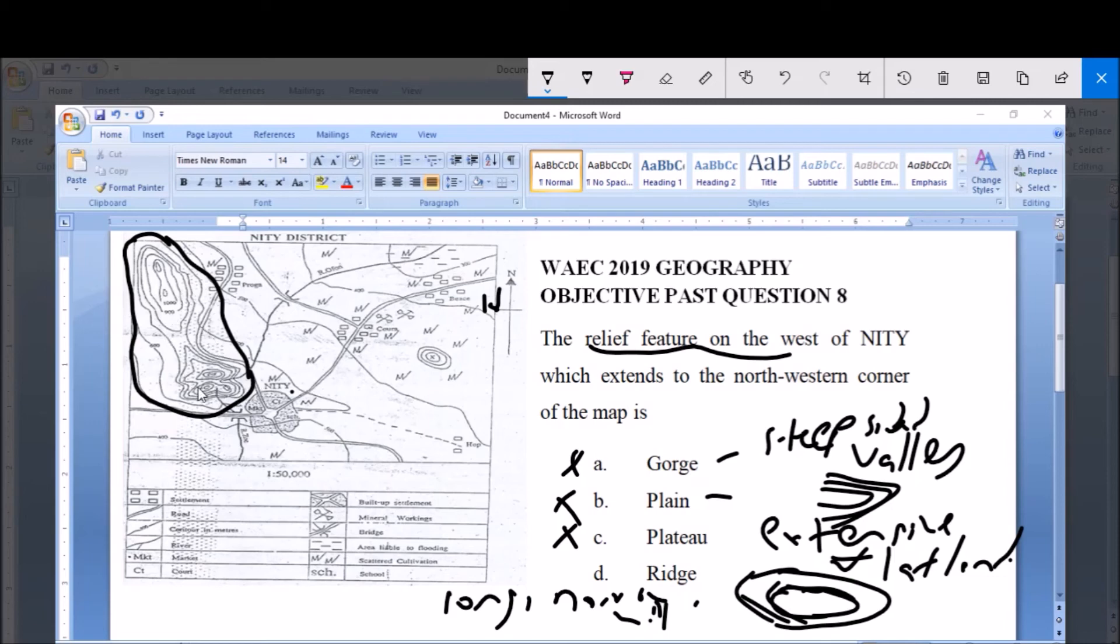is usually greater than the width. So this is the length of it and this is the width of it, and you can see that the length is longer than the width. Hence the correct answer is option d, which is ridge. So please subscribe to this YouTube channel for more videos and for more past questions and answers. Thank you.